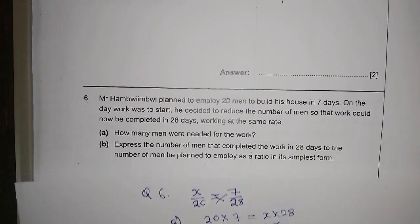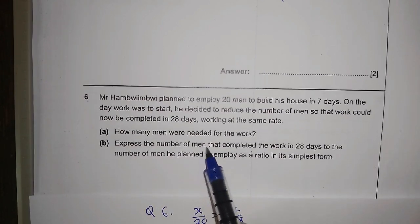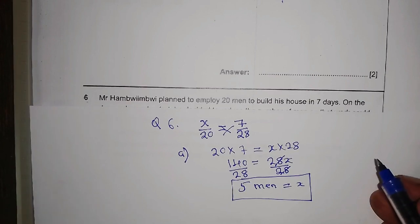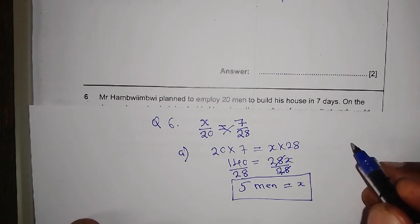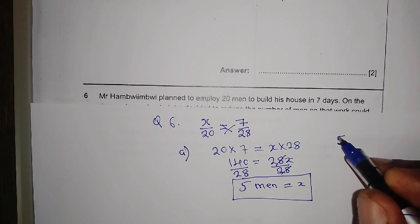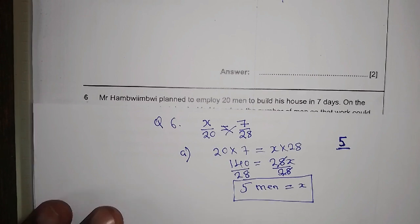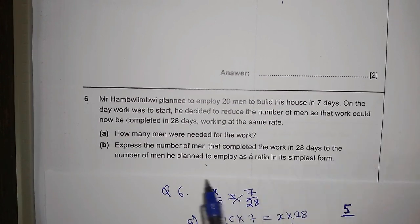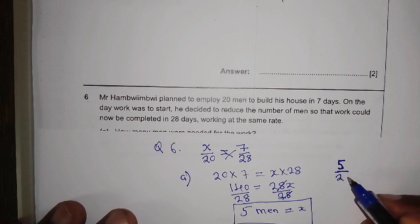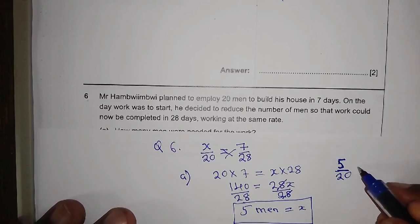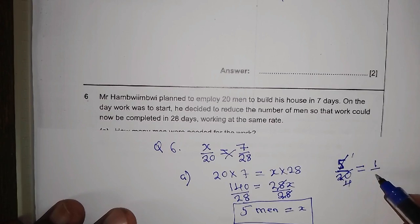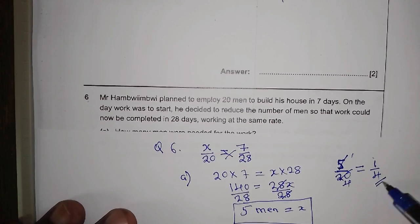Question six part B says: express the number of men that complete the work in 28 days as a ratio to the number of men originally planned to employ. We found five men complete in 28 days, and the original plan was 20 men. So the ratio is 5 to 20. Dividing both by 5 gives the simplest form: 1 to 4, or one over four.